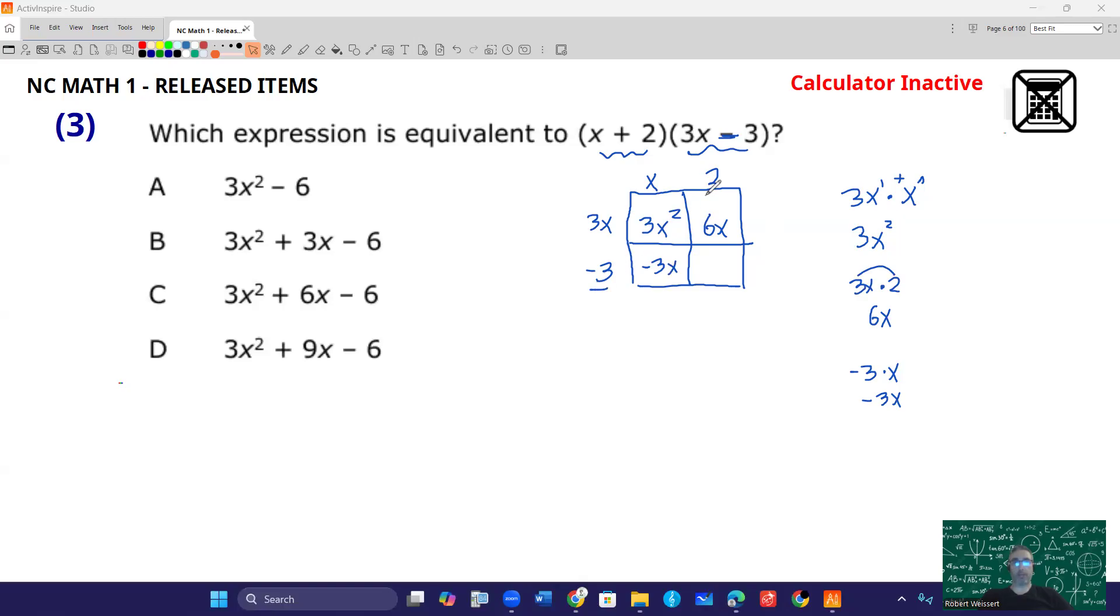Same thing here, negative 3 times x is negative 3x. And then finally, negative 3 times 2. 3 times 2 is 6, so one of those being negative is going to make that negative 6. So you get all those terms in there.